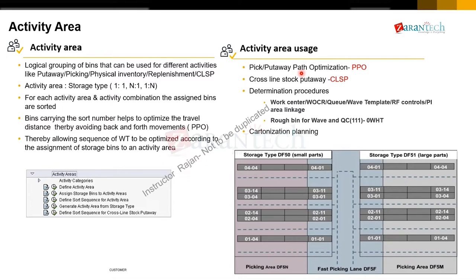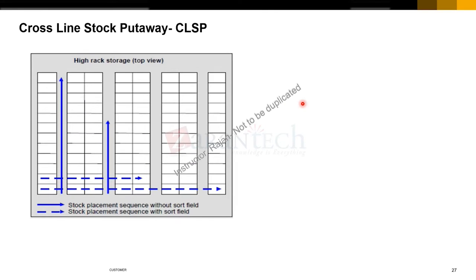CLSP — Cross-Line Stock Put Away — triggers during put away. If you don't do the CLSP sorting, your aisles become one-sided loaded: a few aisles are targeted repeatedly for both put away and picking, and the remaining aisles get no work. If you're running a warehouse at 40–50 percent capacity with aisles 1 to 20, aisles 1 to 8 might be targeted, concentrating the workload — this is called one-sided loading.